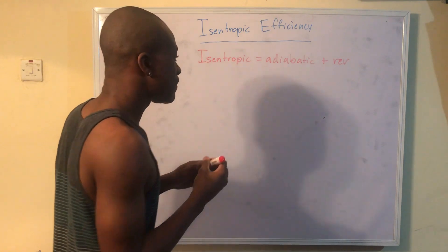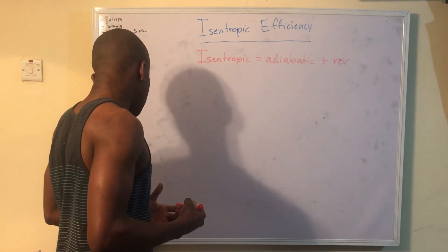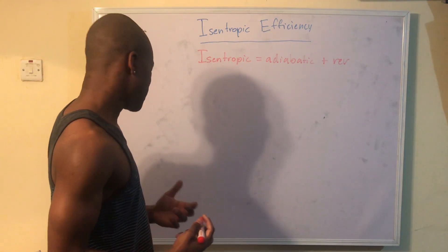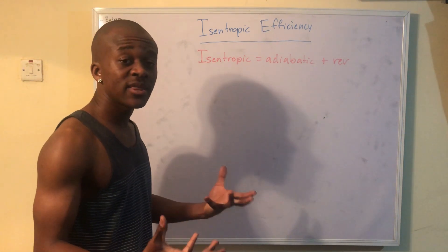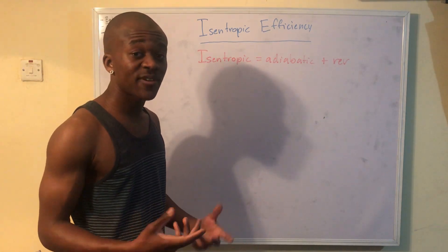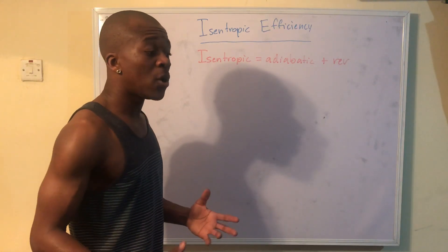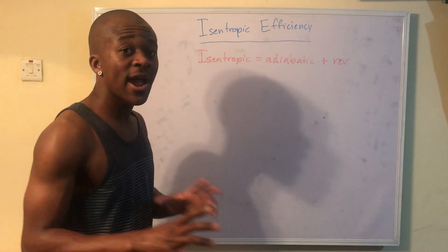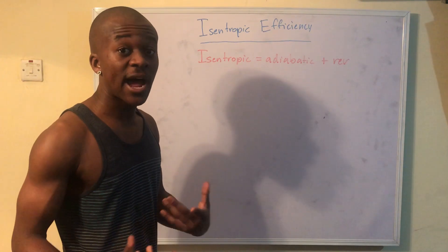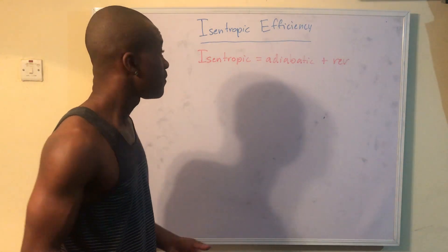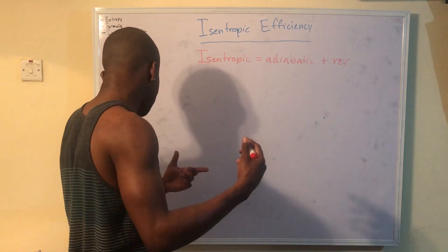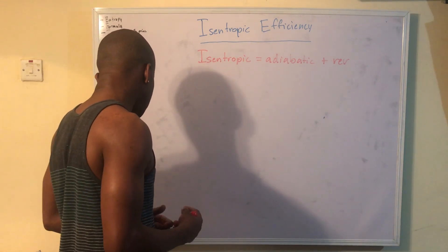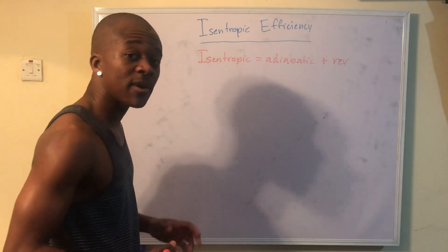So that being said, we're dealing with isentropic devices, we're comparing these isentropic devices to our actual devices. When we're dealing with these, both the actual and the reversible system must be adiabatic. So basically, if we're dealing with adiabatic turbines, compressors, pumps, nozzles, diffusers, we're dealing with adiabatic devices.